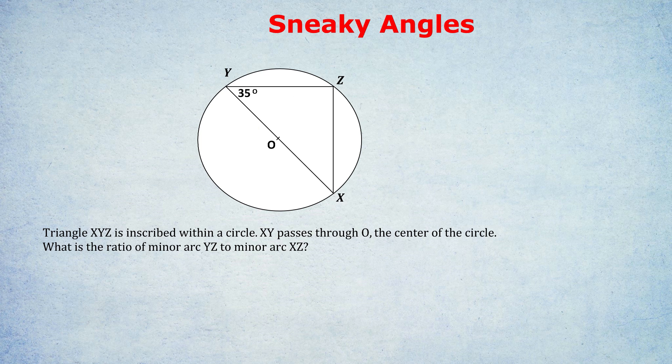We do because it's said that XY passes through O, the center, meaning that XY, by definition, must be a diameter because only diameters pass through the center of the circle. It doesn't seem like it, but they're telling you that XY is a diameter because it passes through O, the center of the circle. And if XY is the diameter, as I said in the previous example, the angle opposite to the diameter, in this case Z, must be 90 degrees.